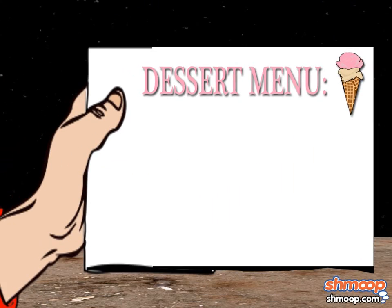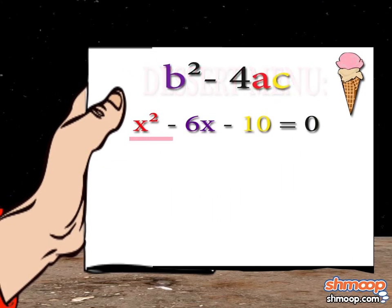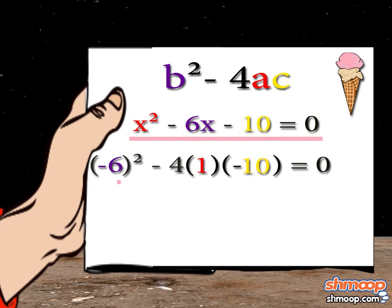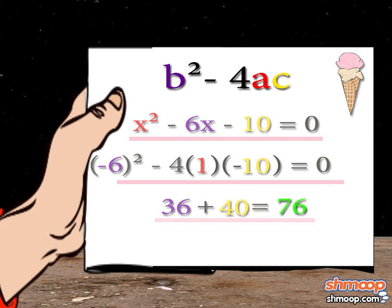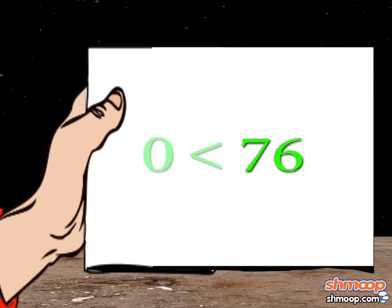For our second example, we have the equation x squared minus 6x minus 10 equals zero. Plugging this into the discriminant, it looks like 6 squared minus 4 times negative 10 times 1. This is 36 plus 40, which is 76. 76 is greater than zero.